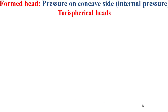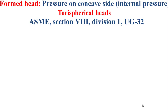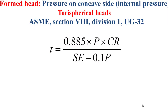Now I will explain how to determine the appropriate thickness for a tori-spherical formed head subjected to pressure applied on the concave side, which means internal pressure, based on ASME Section VIII Division 1 UG-32. We use this formula. P is the internal design pressure, CR is the internal crown radius, S is the maximum allowable stress, and E is the joint efficiency, determined as explained in the last educational video.